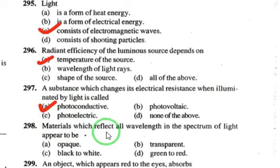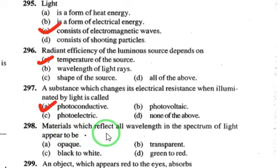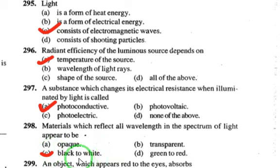A material which reflects all wavelengths in the spectrum of light appears to be white. If it absorbs completely it is black; if it reflects all wavelengths it is white. So the answer ranges from black to white.